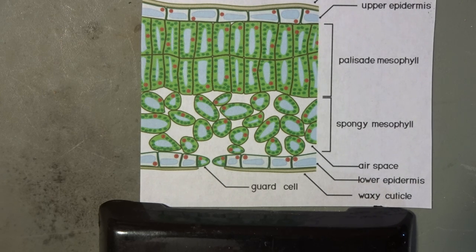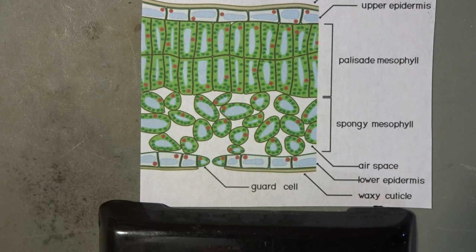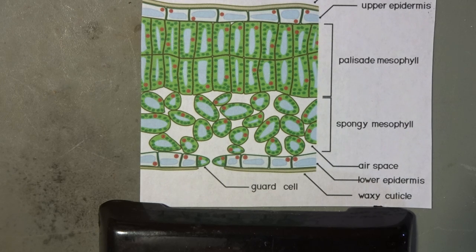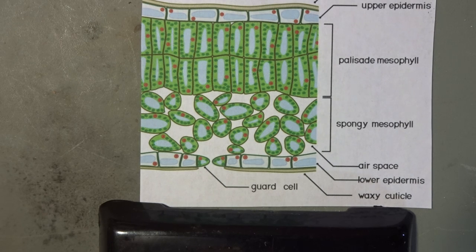There are small openings called guard cells or stomata that cover the surface of the leaf. The stomata open and close to release water and gases from the plant. Stomata are produced in pairs with a gap between them that forms the stomatal pore. The stomatal pores are the largest when water is available and are closed when water is not available. Photosynthesis relies on the diffusion of carbon dioxide from the air through the stomata into the spongy mesophyll tissue.